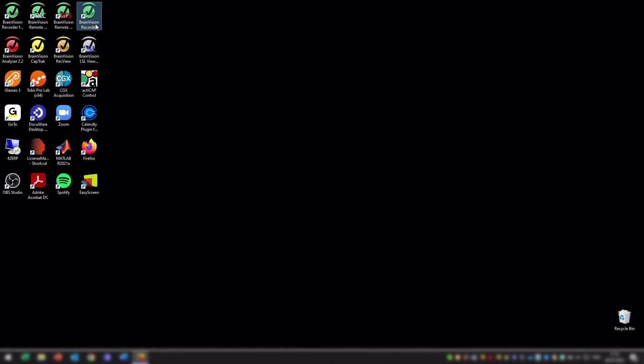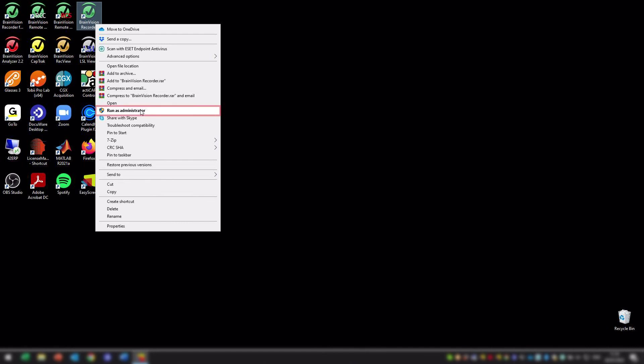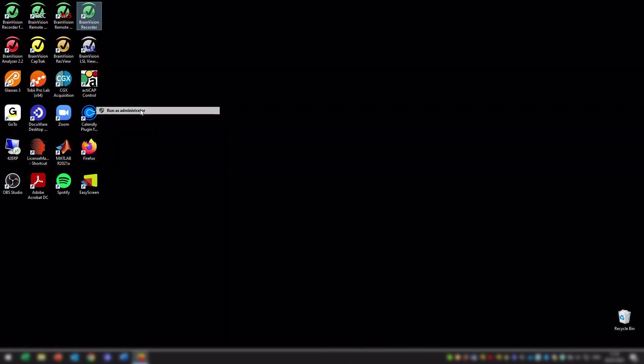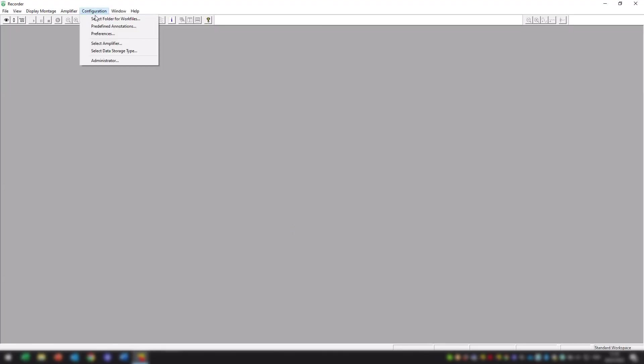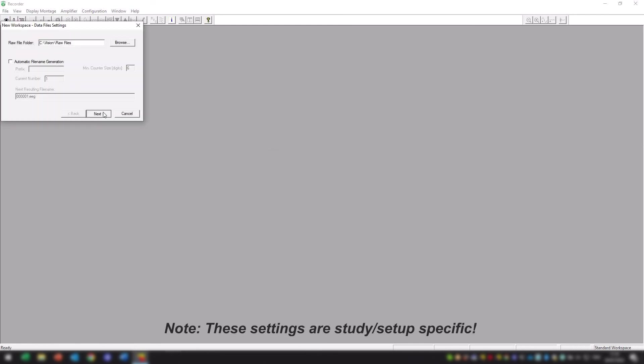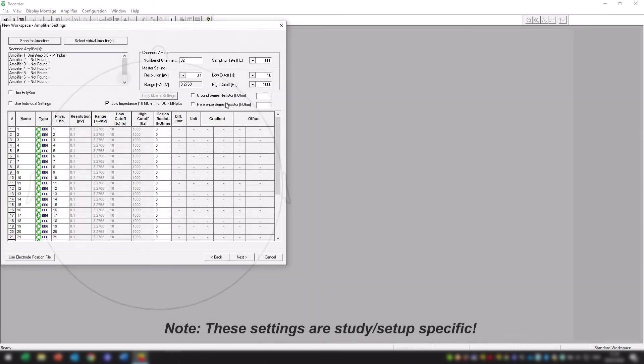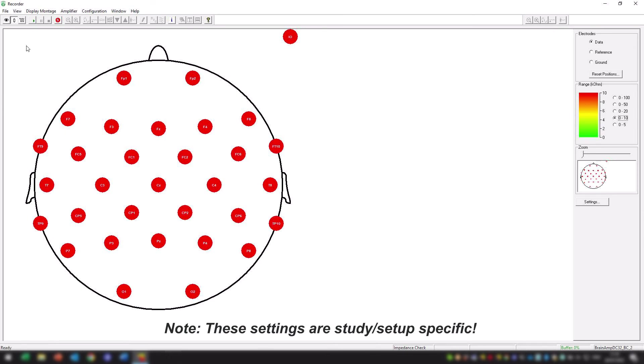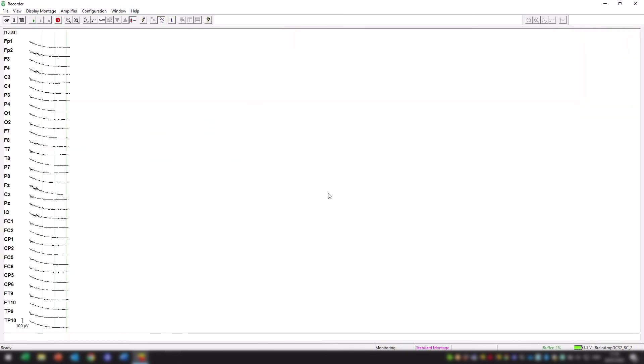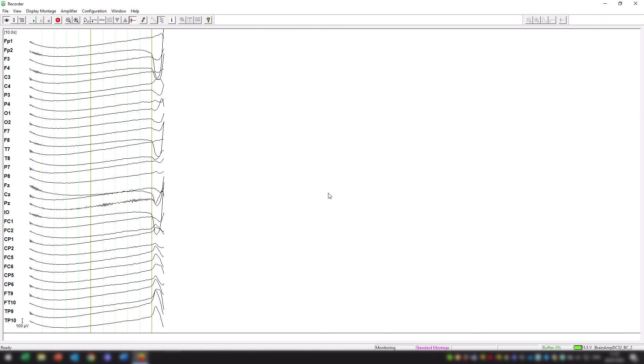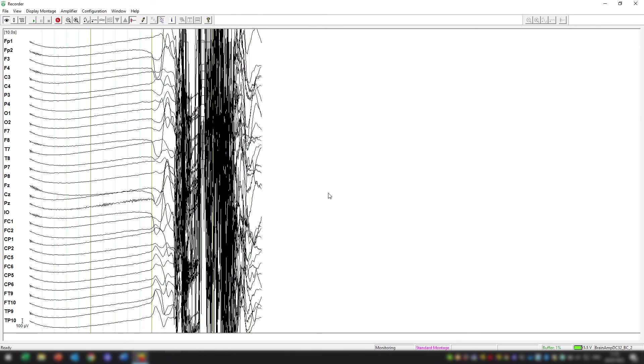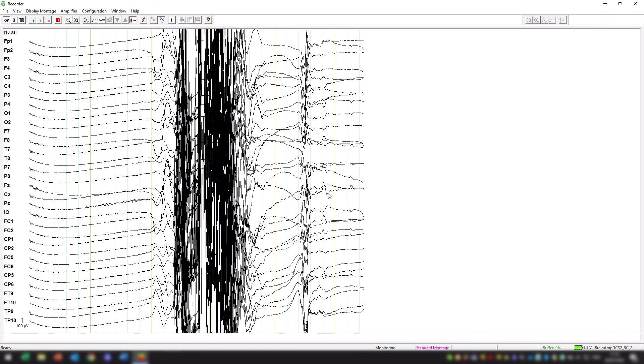Next, start the BrainVision Recorder software. Make sure BrainAmp option is selected as the used amplifier family. Set up your workspace and impedances and then proceed with the recording. Detailed information on how to set up and use BrainVision Recorder is of course available in the respective user manual.